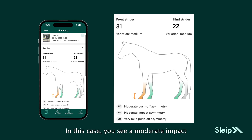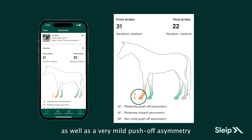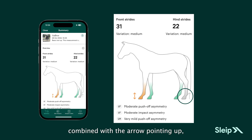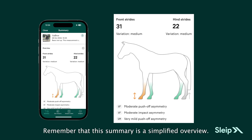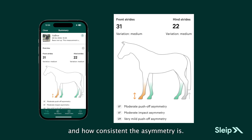In this case, you see a moderate impact and push-off asymmetry originating from the left front, as well as a very mild push-off asymmetry from the left hind. The gray-colored left hind limb combined with the arrow pointing up indicates a very mild push-off asymmetry. Remember that this summary is a simplified overview — always look at the detailed analysis and how consistent the asymmetry is.